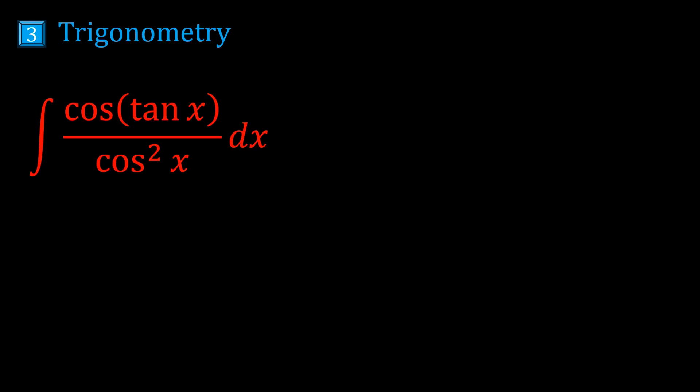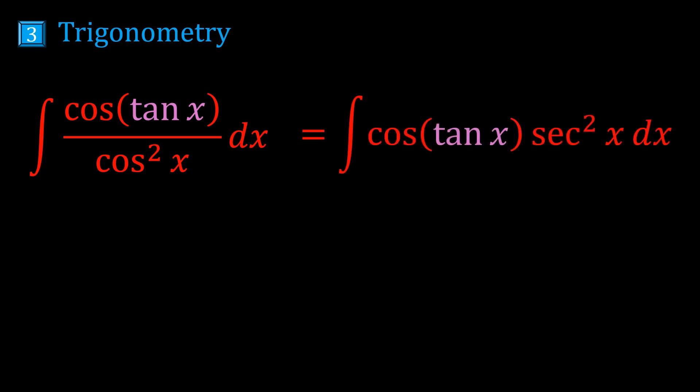Next we have cos(tan x) divided by cos²x. We look at what's inside the cosine: it's tan x. The derivative of tan x is sec². Do we have that being multiplied? Yes — 1/cos² is sec², because sec is defined as the reciprocal of cosine. So we have it in the right form. We just ask: how do we integrate cos? We get sine. So the answer is sin(tan x).